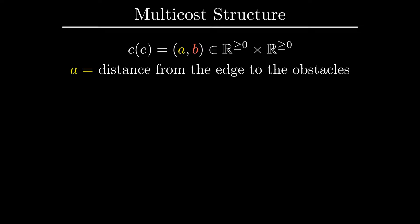The multi-objective shortest path problem naturally fits into the same framework as the classical one, if we redefine the type of the cost function. In our case, cost of an edge is given by a pair of non-negative reals (a, b), where a is the distance from the edge to the obstacles, and b is its length, which for grid graphs is always equal to 1.